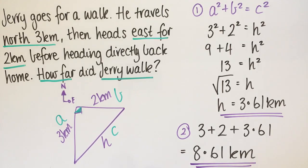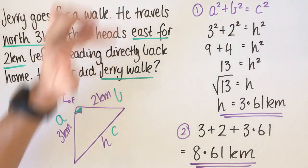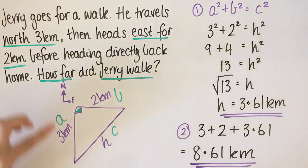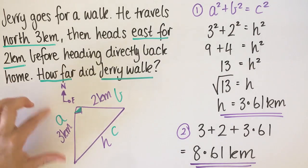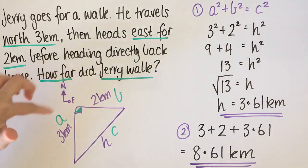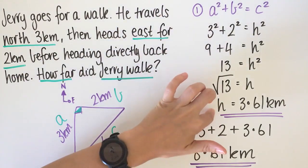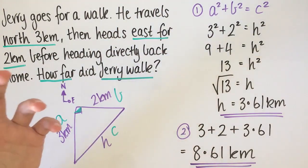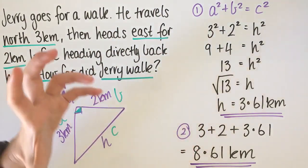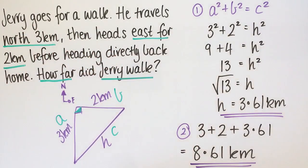Thinking back to our learning intention: we needed to select key information from a worded problem, draw and label a triangle appropriately, select the right formula, substitute and solve, and use problem-solving skills to check whether our answer makes sense. If you can do all of those things, you've met today's success criteria.